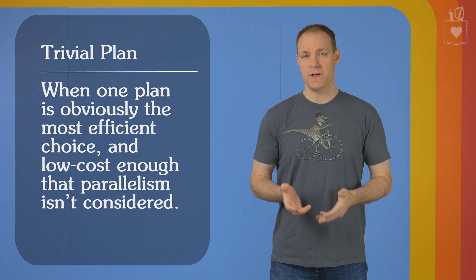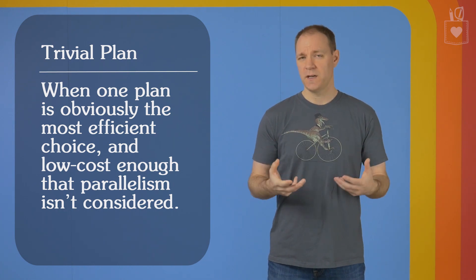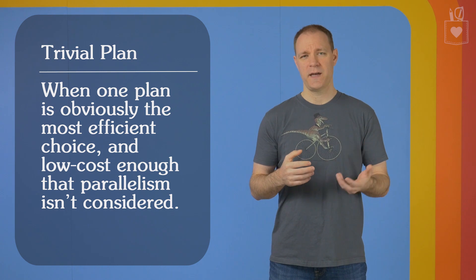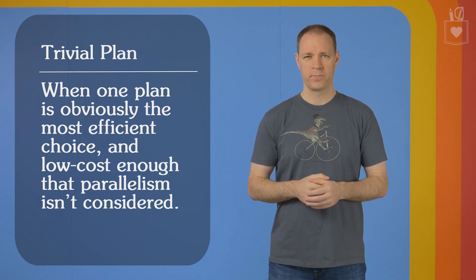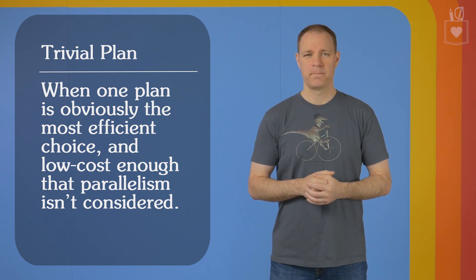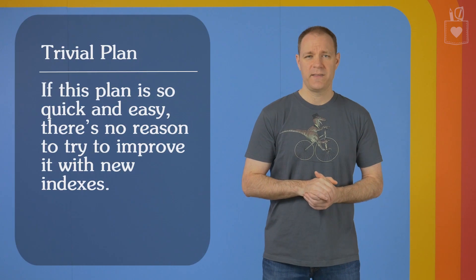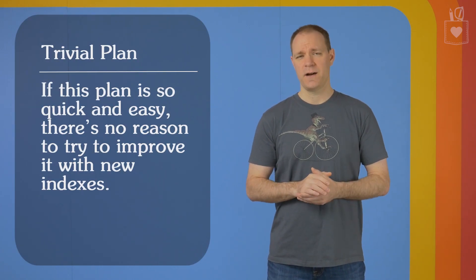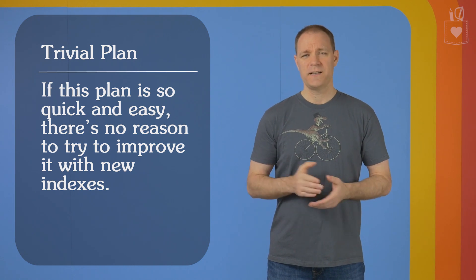When a trivial plan is created, a few things happen. Number one, it skips over the cost based optimizer, meaning that this plan will not go parallel because there's no cost being equated to it, and so it can't be compared against the cost threshold for parallelism. Because there's no cost, no cost threshold can be met, it'll be serial. Another thing that happens is that missing index requests are not generated, which makes sense. If you've already got a plan that is so cheap and so easy to figure out, why bother working hard to make it faster if it's already fast enough?